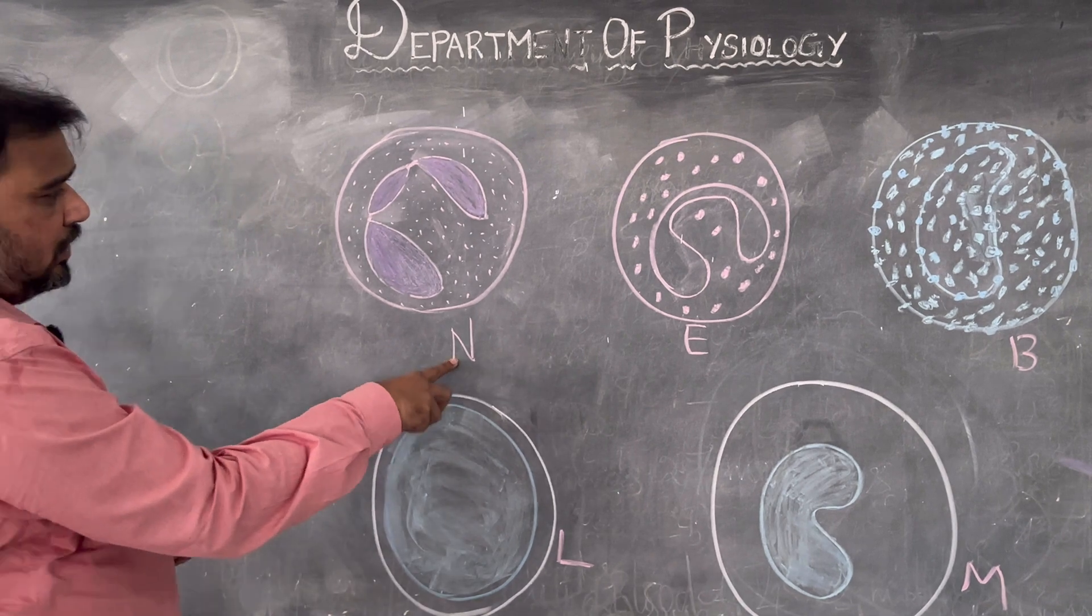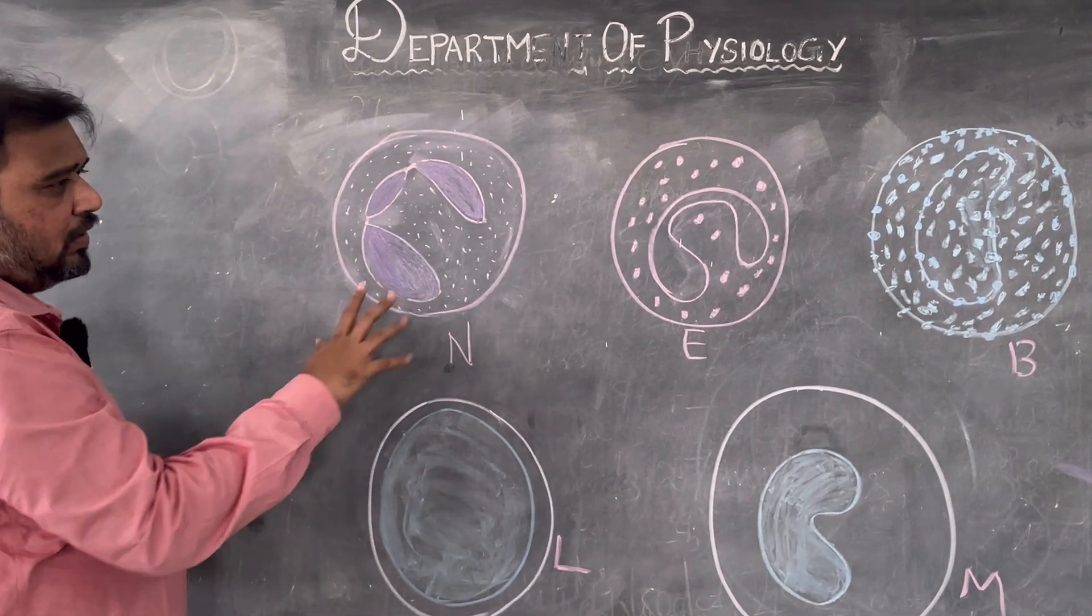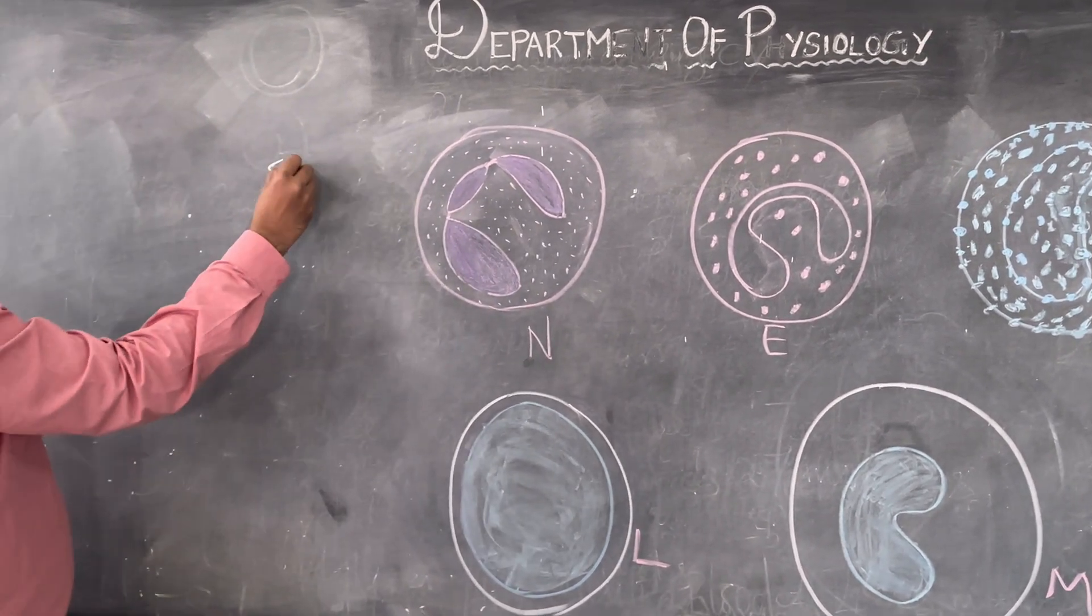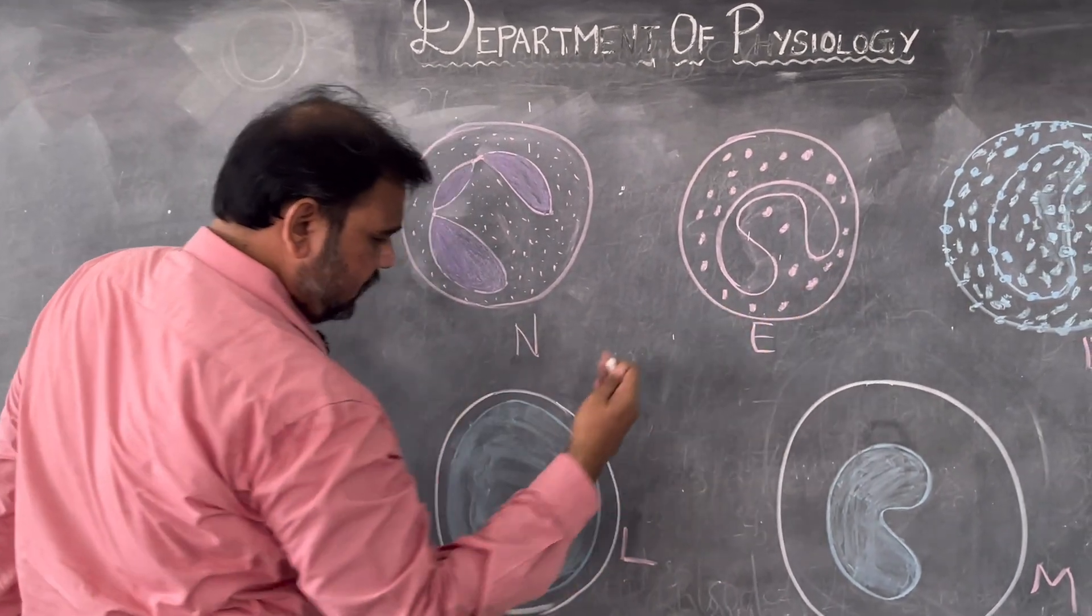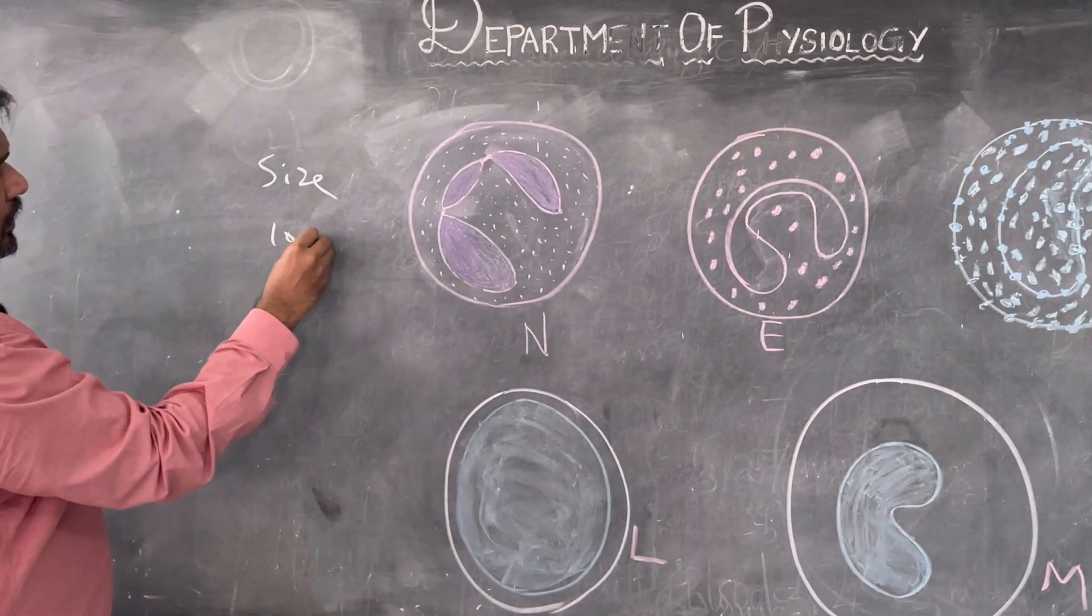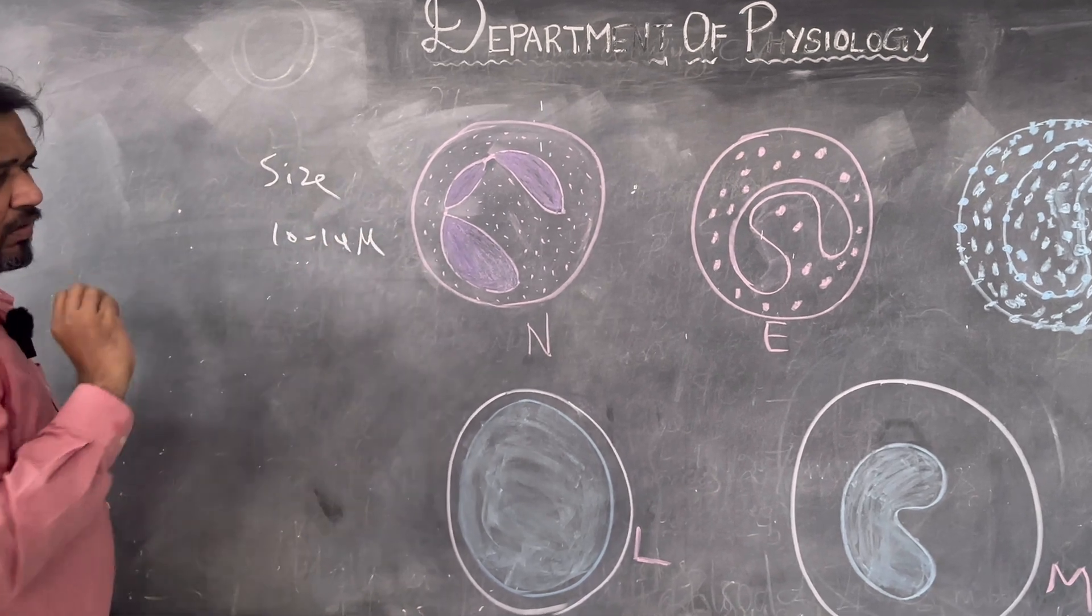Just concentrate. This is neutrophil, and you can see here three lobed neutrophil. Regarding size, neutrophil, eosinophil, basophil, and lymphocyte all are around 10 to 14 microns in diameter.